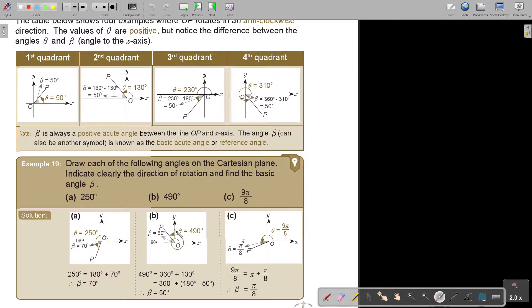130 will be between 90 and 180 there. And again, if I say 180 minus 130, I get 50. So beta is 50. And then this one...